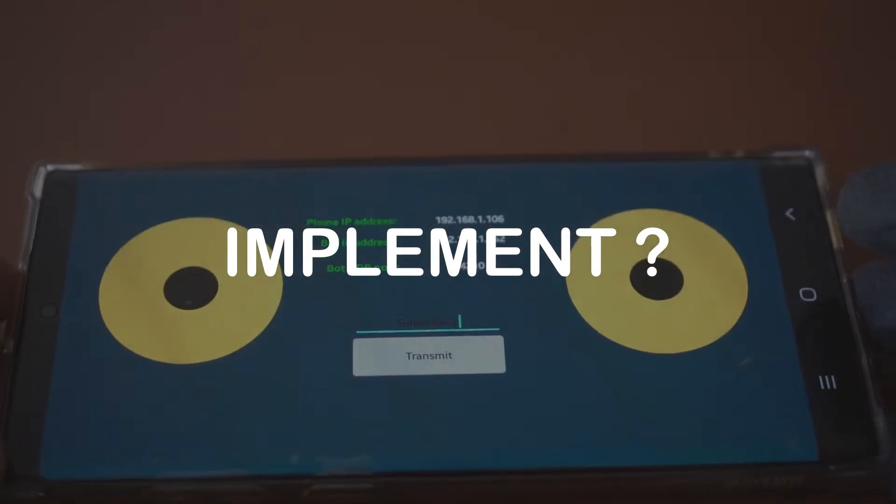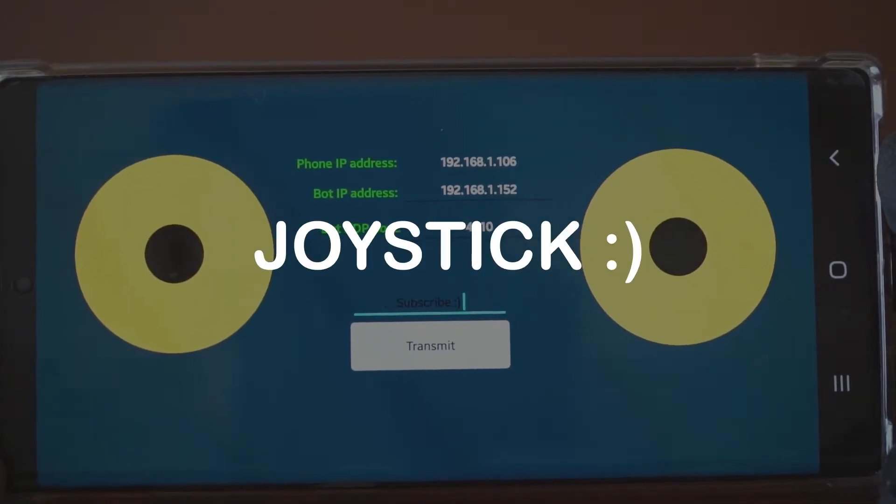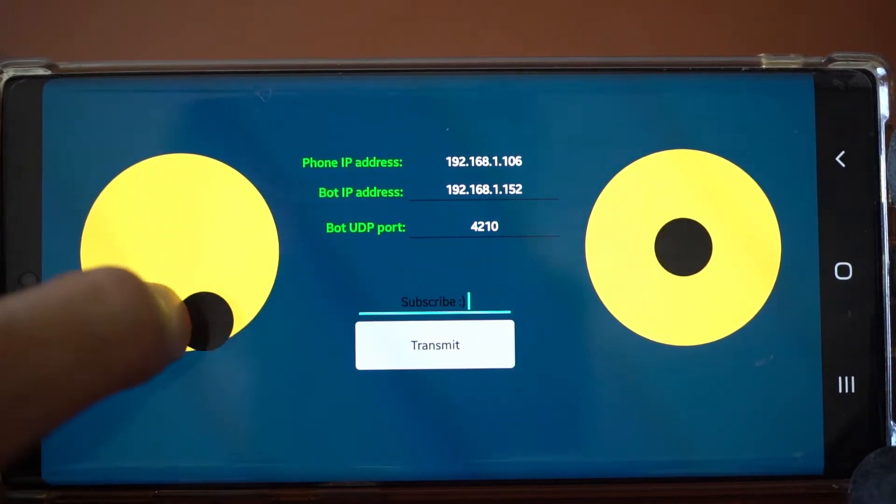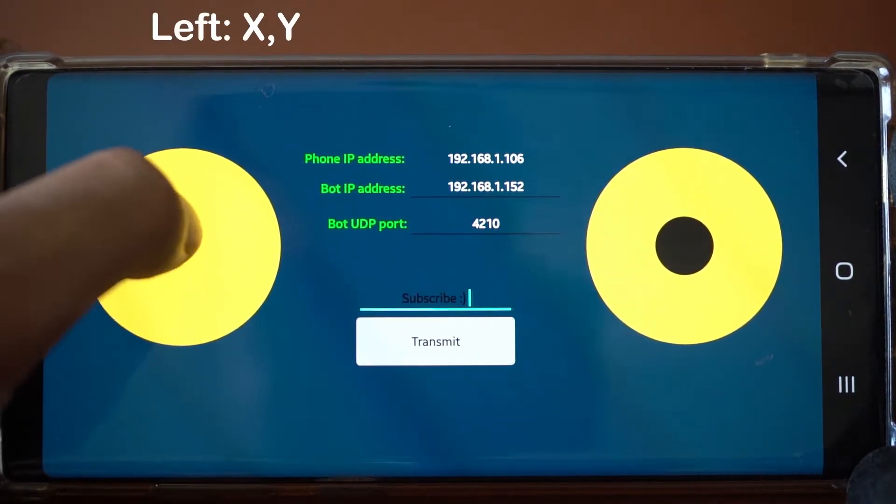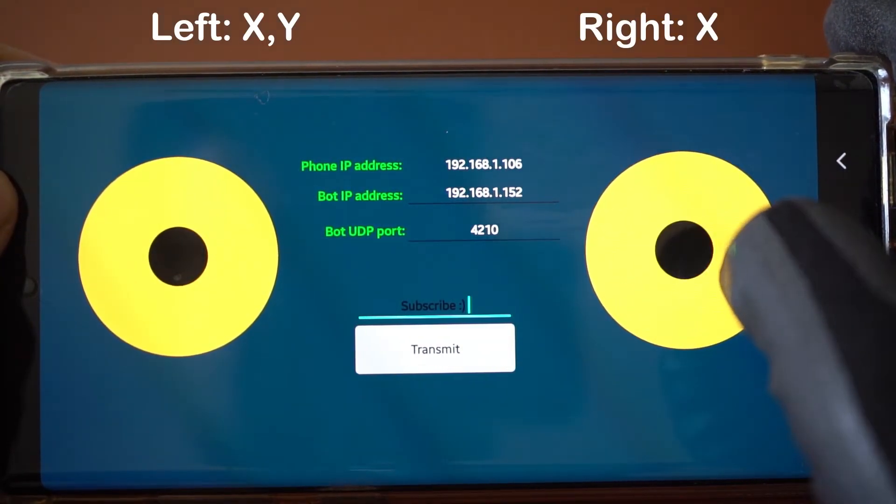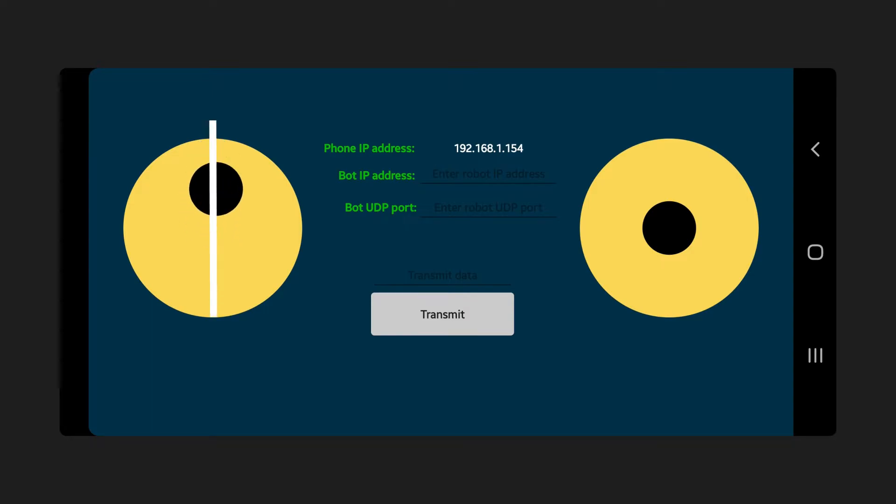Now, how do we implement these equations? The answer is a joystick. This is our robot's joystick app, which connects via WiFi.